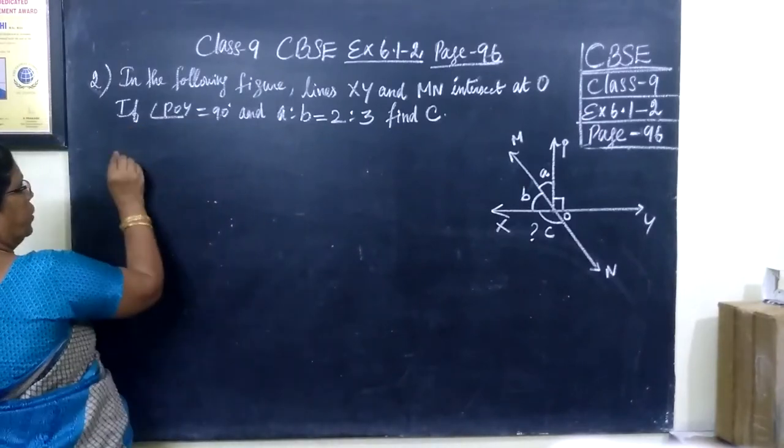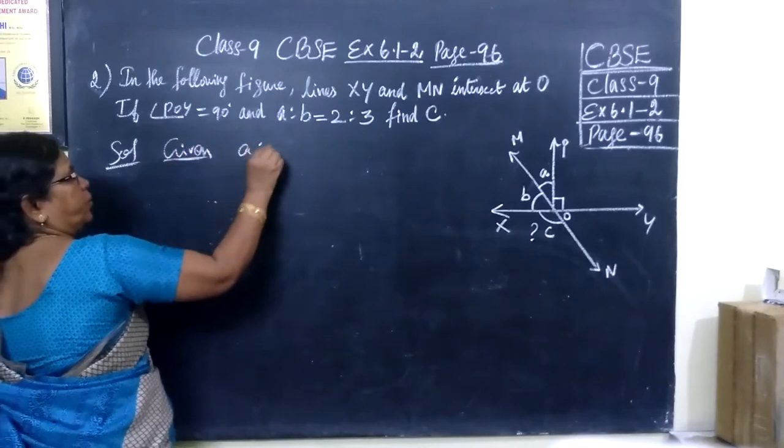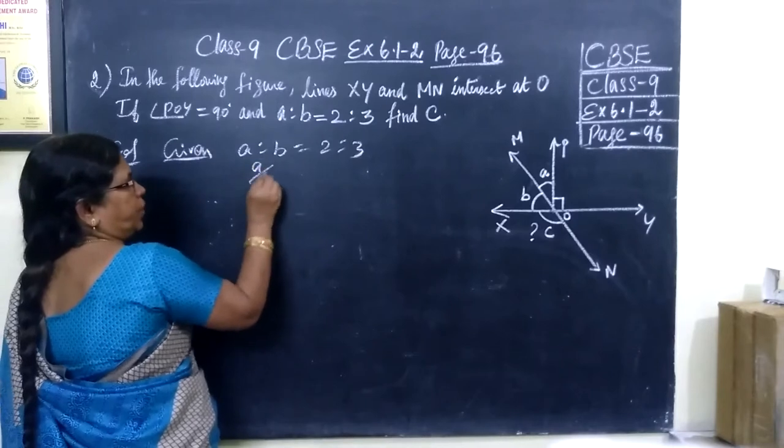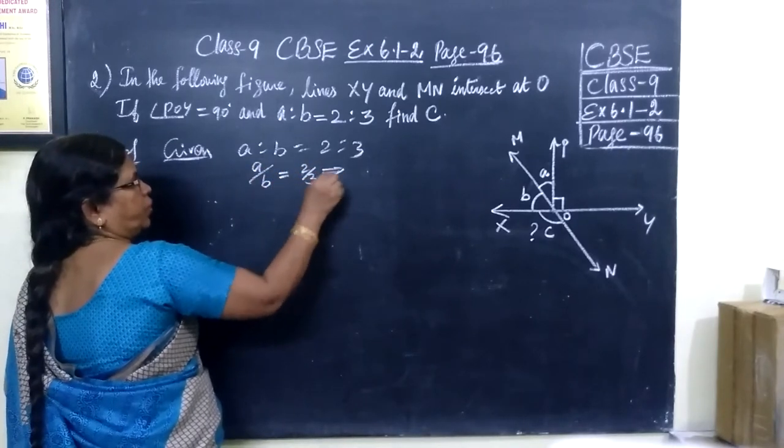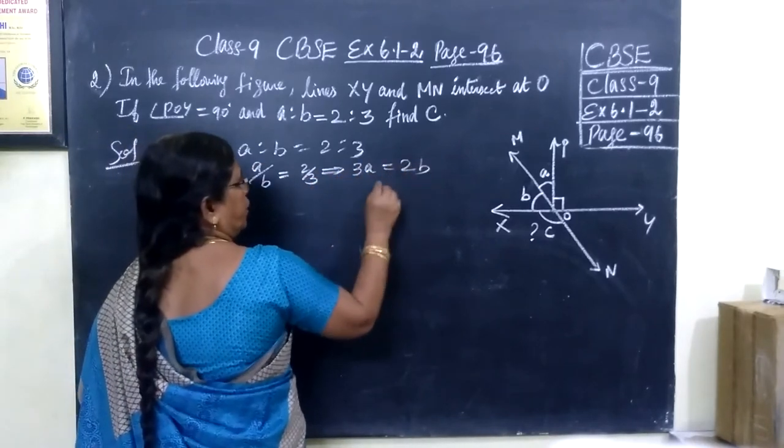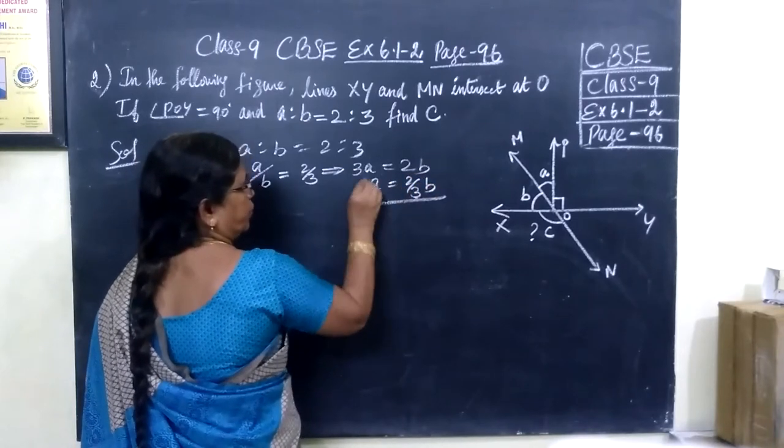Given A is to B equals 2 is to 3. So this implies A by B equals 2 by 3. If you cross multiply, 3A equals 2B, or A equals 2 by 3B. So keep A as it is.